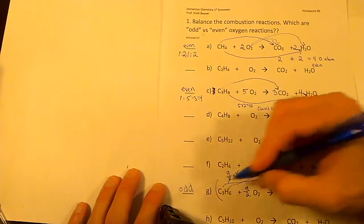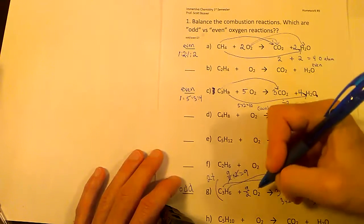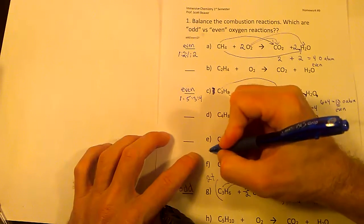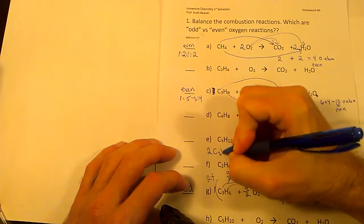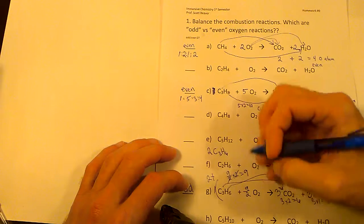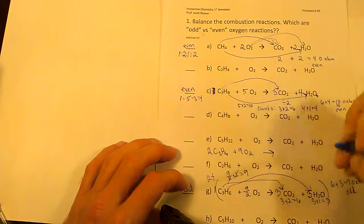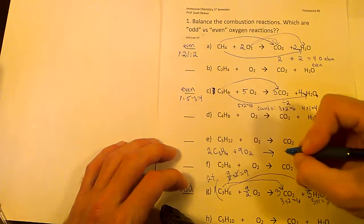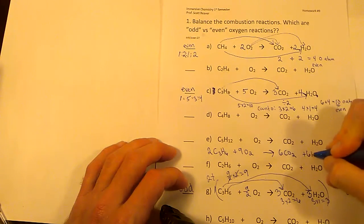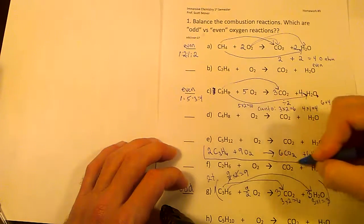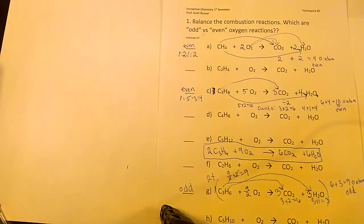We need whole numbers, so multiply both sides of the equation by two. We had one C3H6 — times two gives two C3H6. Nine-halves times two gives nine O2. Three CO2s times two gives six CO2. Three H2O times two gives six H2O. So the balanced equation is: 2 C3H6 + 9 O2 → 6 CO2 + 6 H2O. There's an extra step for odd-oxygen problems — you basically have to rewrite the equation.